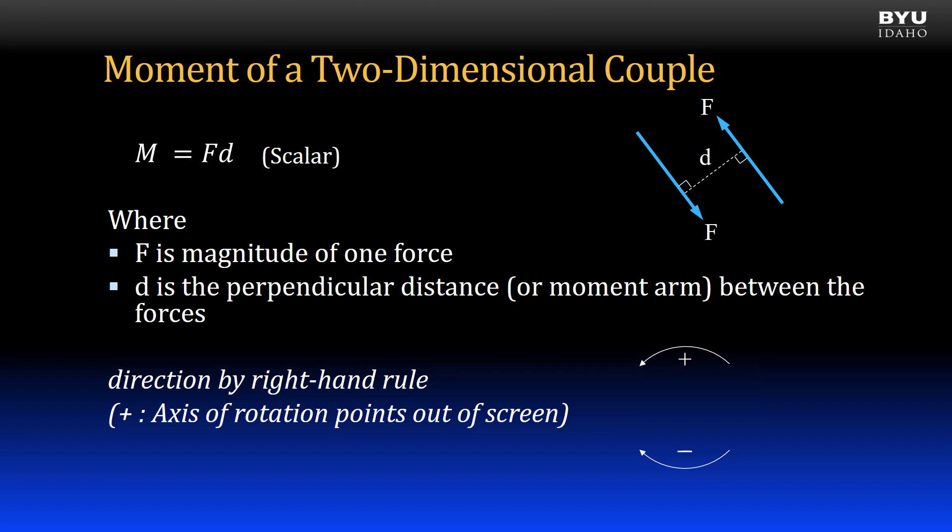So by the right-hand rule, the axis of rotation points out of the screen. For negative moments, the axis of rotation would point into the screen.